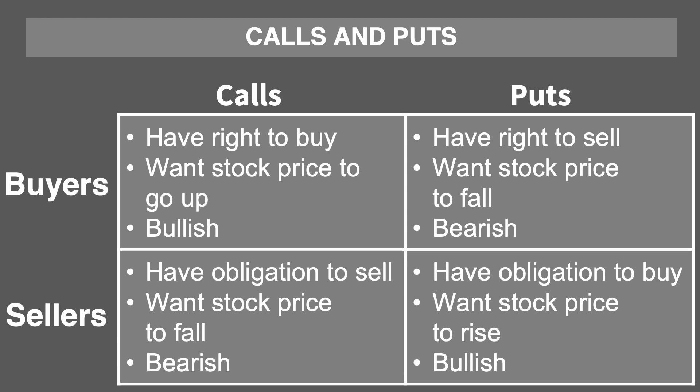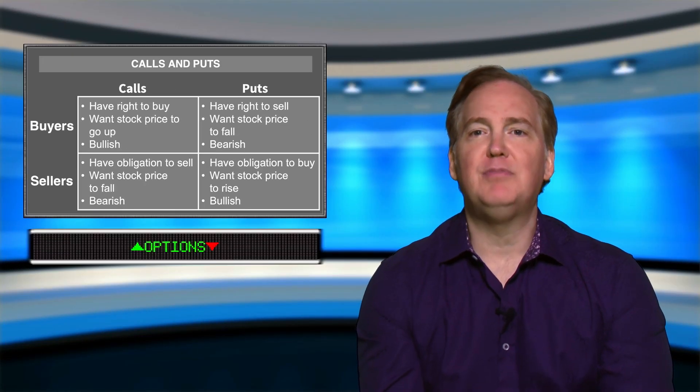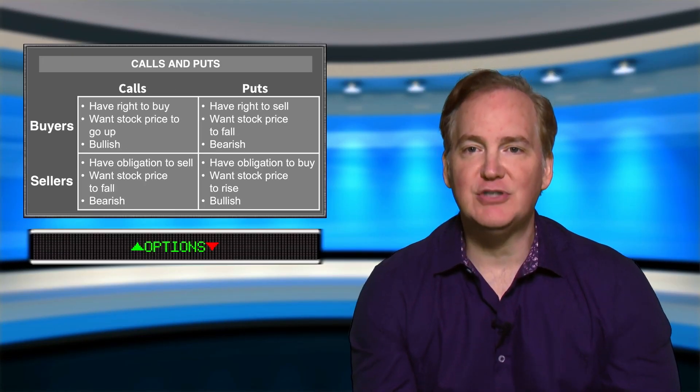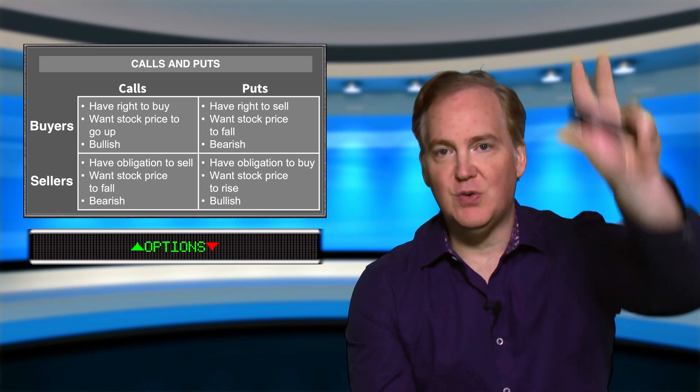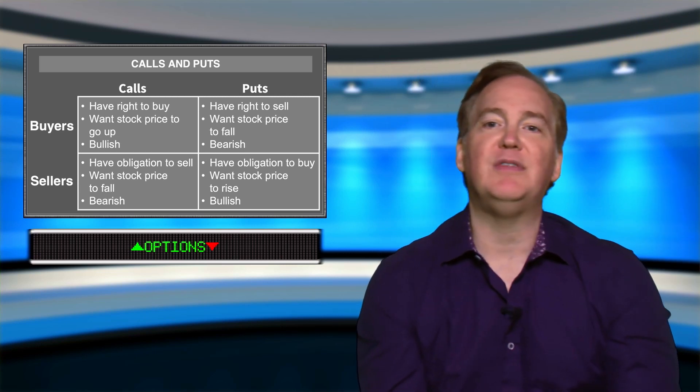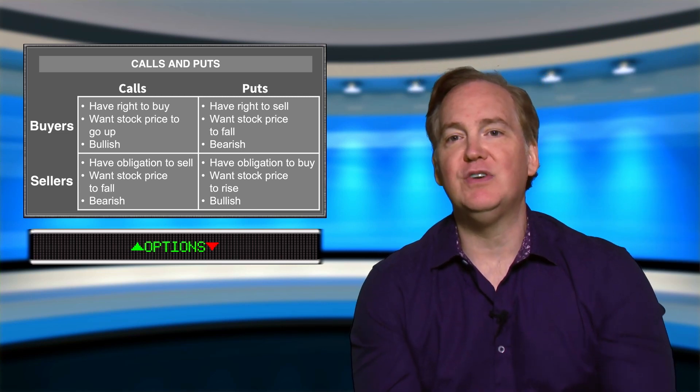The buyer of a put has a right to sell the stock — they are bearish and want the stock to go down. The seller of a put takes on an obligation to buy the stock — they are bullish and want the stock to go up. The term bullish and bearish originated from the way the animal strikes: a bull raises its horns up, and a bear swats you down with its paw.